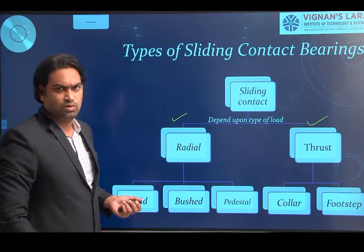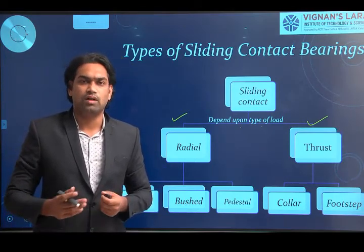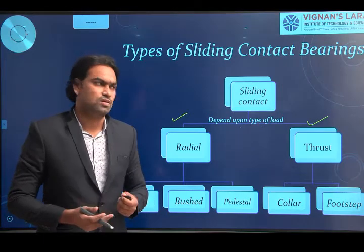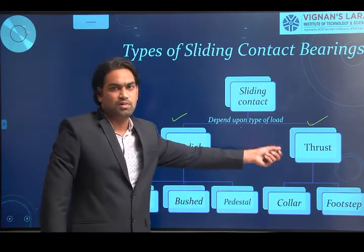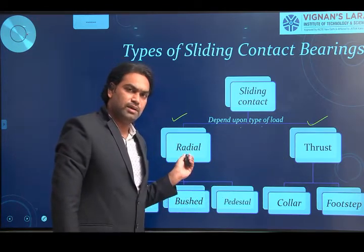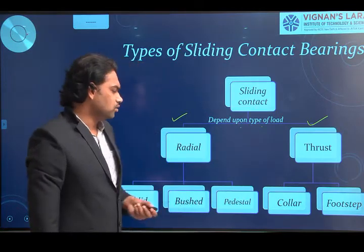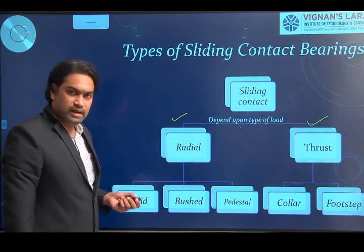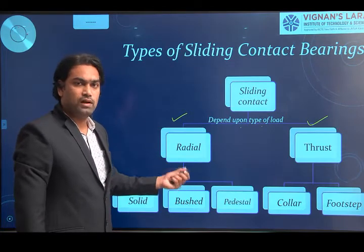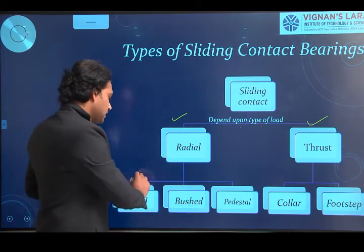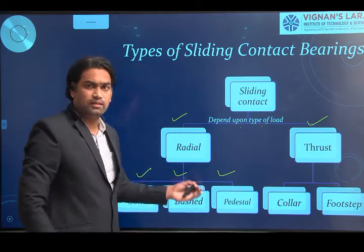Let us briefly look at these types. Under radial type sliding contact bearings we have three different types: solid bearing, bushed bearing, and pedestal bearing. Under thrust bearings, which support axial loads, we have two types: collar bearing and footstep bearing (also called pivot bearing). You are already aware of these, having drawn their designs in your previous course of machine drawing.